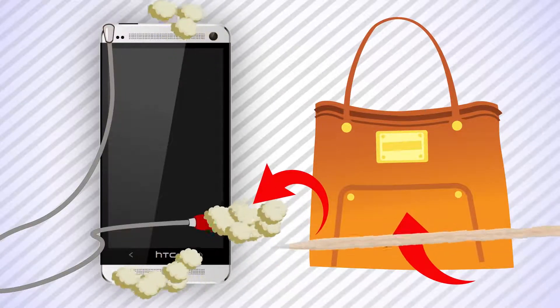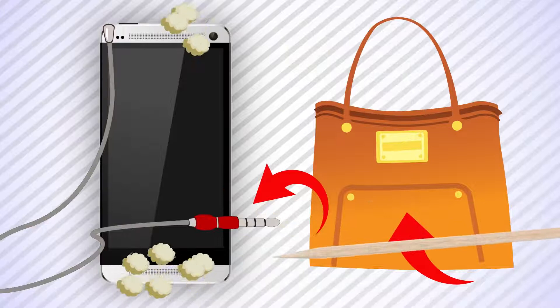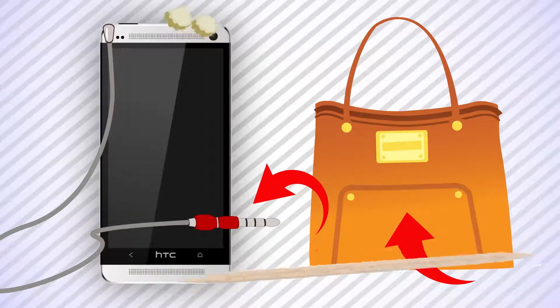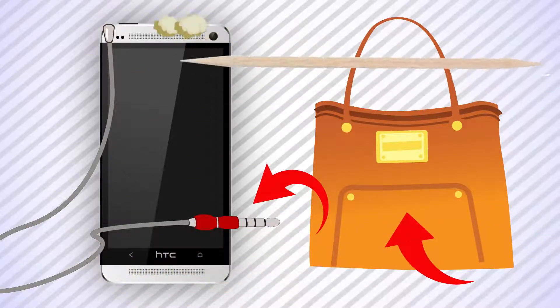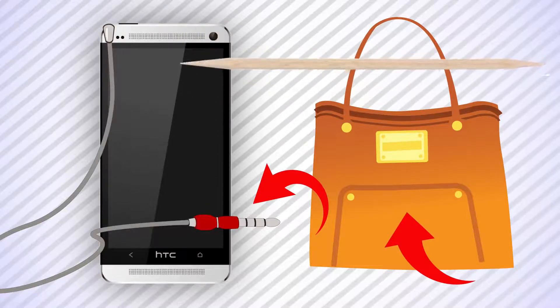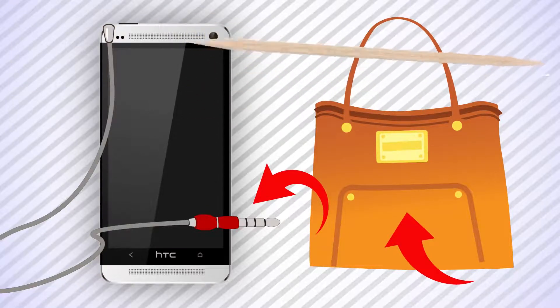To remove the debris, turn off the phone and carefully clean all the ports with a toothpick. Don't forget to put a piece of soft lint-free cloth on its end. To avoid such situations, choose a compartment in your handbag exclusively for keeping the smartphone in it.